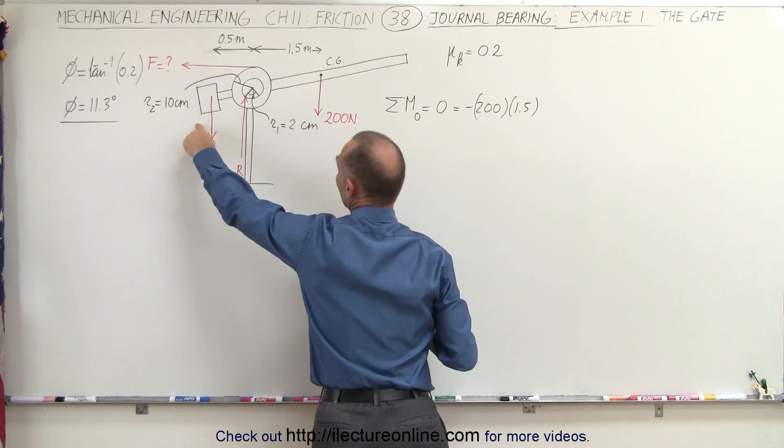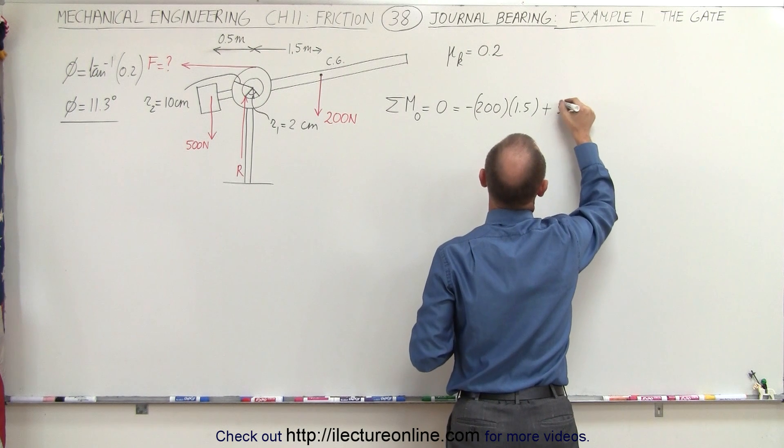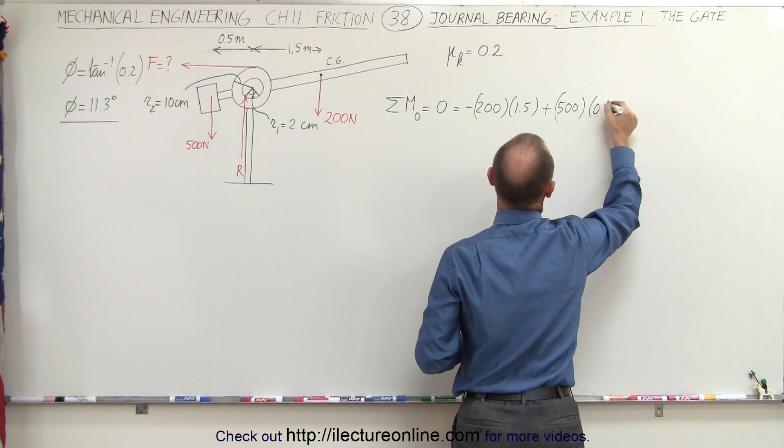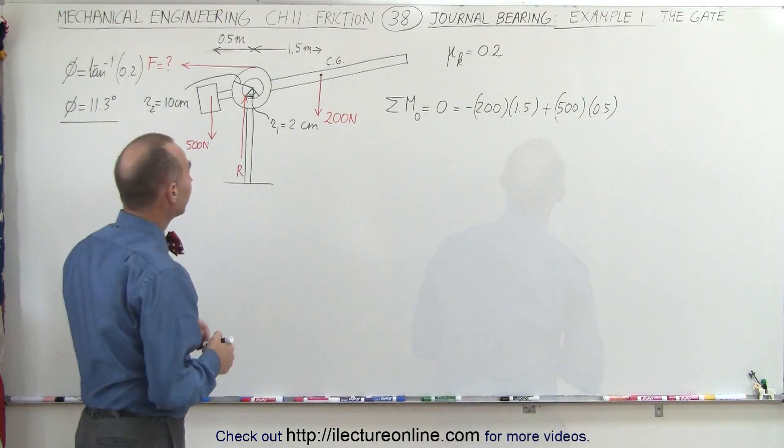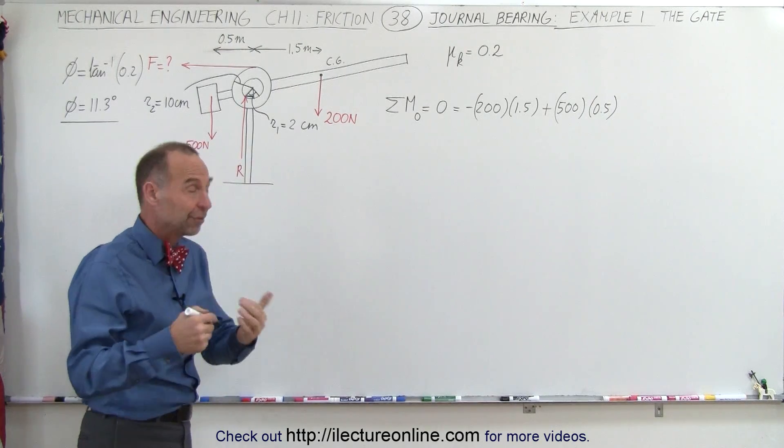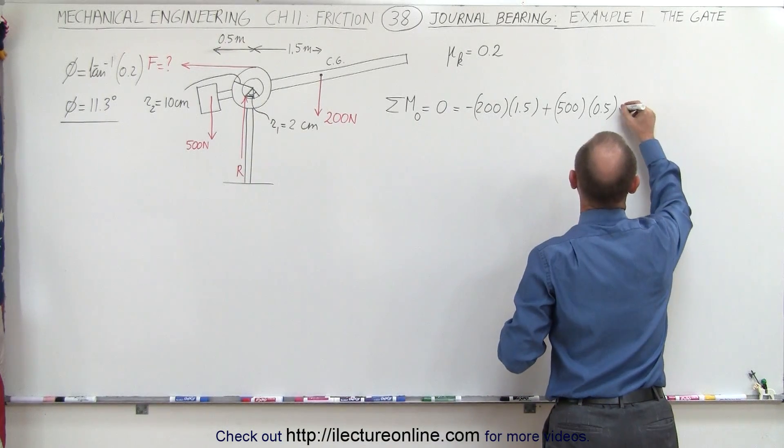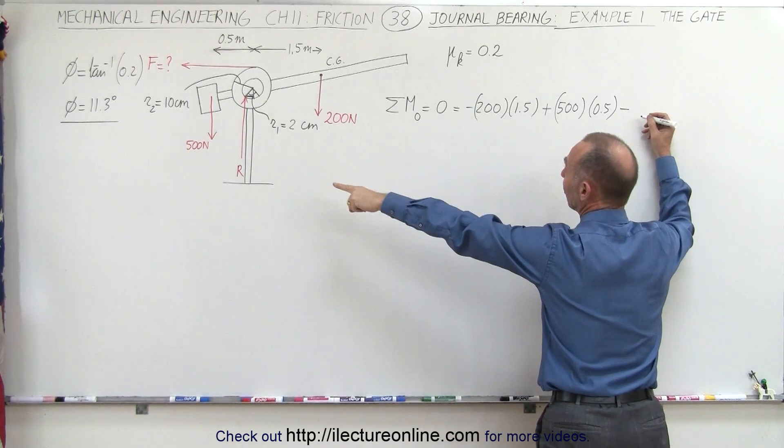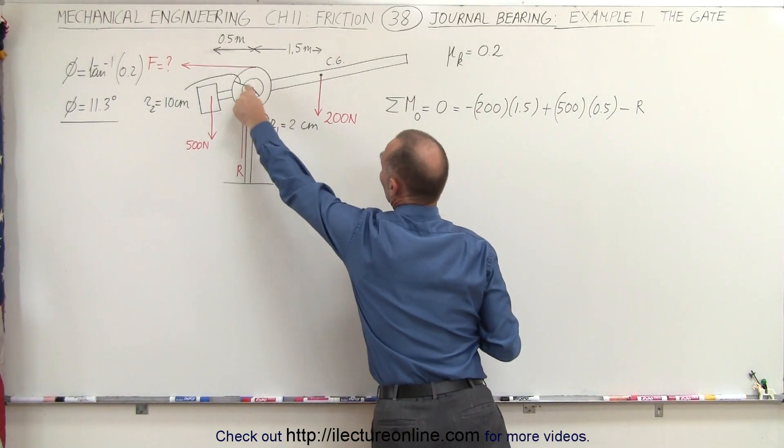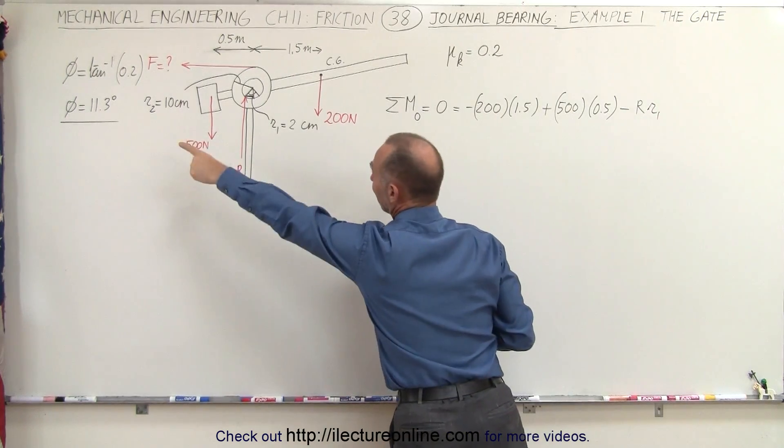And then we have the counterweight, which gives us a counterclockwise rotation, plus 500, and the moment arm for that one will be 0.5. Next, we need to find the moment caused by the reaction force. From the previous video we saw that's going to be clockwise, so it's negative.